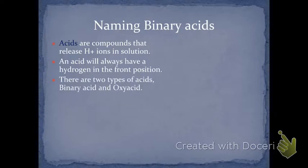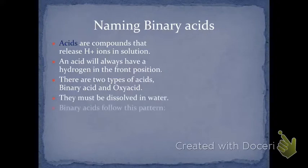Acids always have hydrogen in the first position. There are two types we're talking about: binary and also called oxyacids. Oxyacids have oxygen in them. They must be dissolved in water, and binary acids follow this pattern when you name it: hydro, then you have the root of the compound, followed by ic, and then acid.